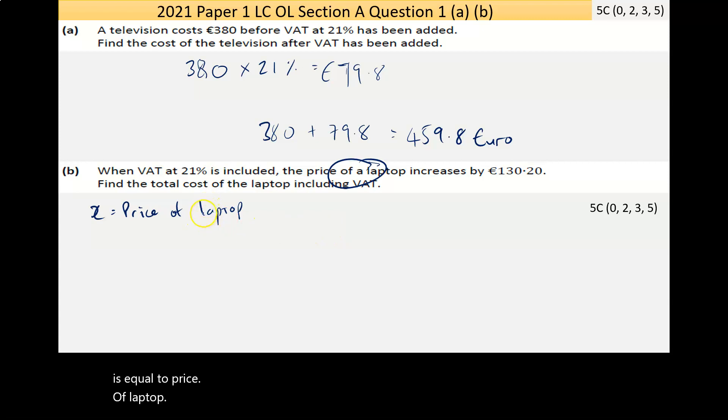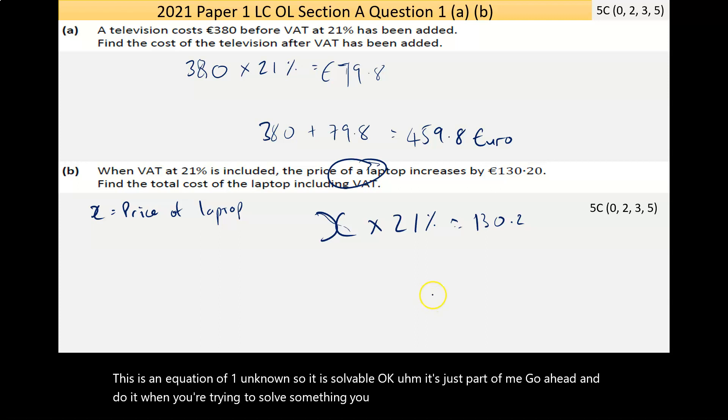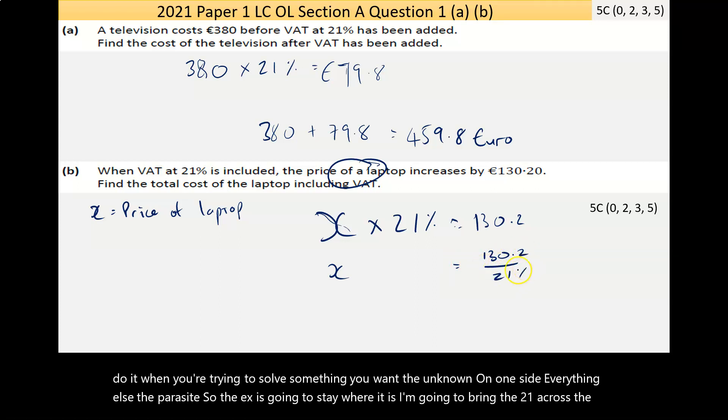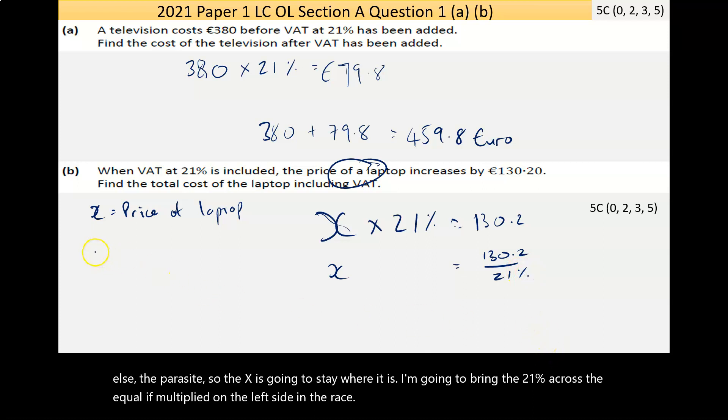I know that when I multiply the price of laptop by 21 percent, I get €130.2. So I can make an equation: x times 21 percent equals 130.2. This is an equation of one unknown, so it is solvable. I want the unknown on one side, everything else the other side. The x is going to stay where it is; I'm going to bring the 21% across the equals - it's multiplied on the left, comes divided on the right.